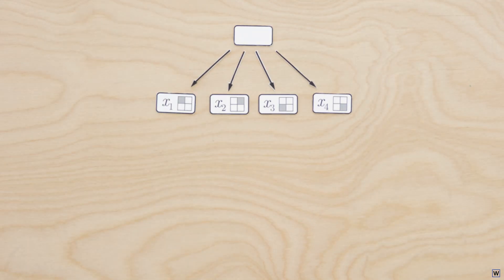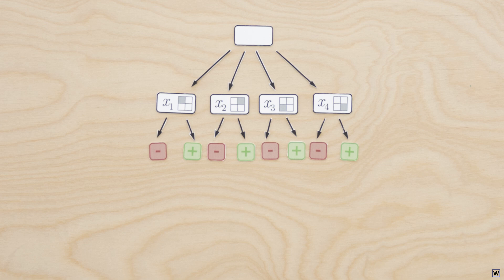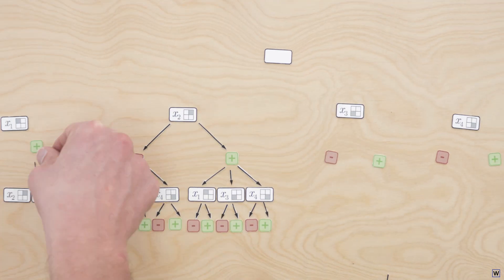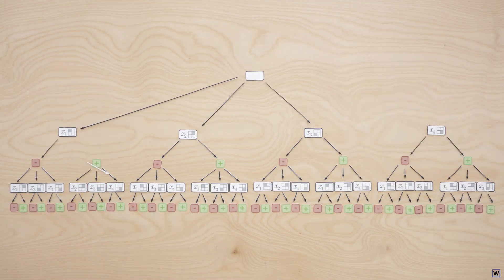For each of our four possible pixels, we must then choose whether to look for a 1 or a 0 in that location. As we expand our search to two pixels, we must repeat this process for each of our eight branches, resulting in 48 total branches, corresponding to 48 possible two-pixel rules.